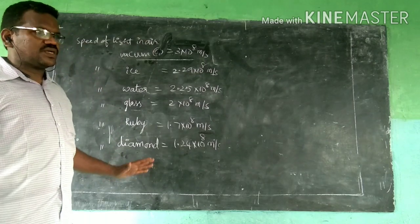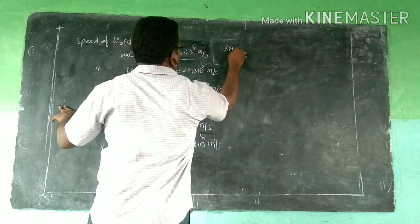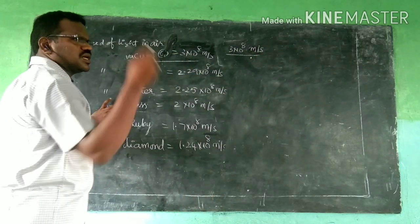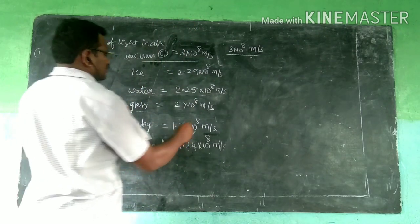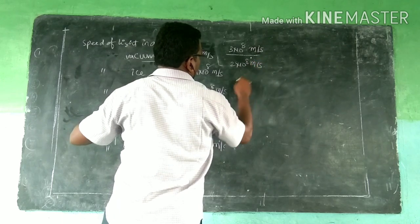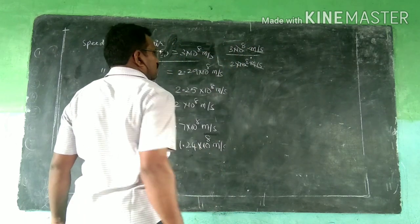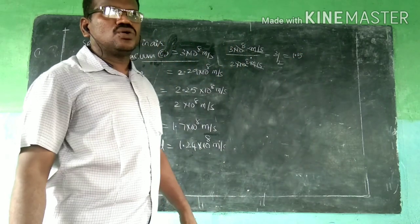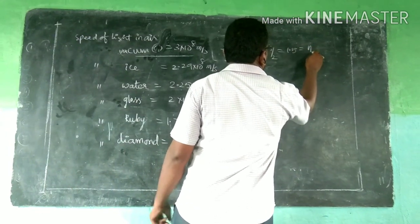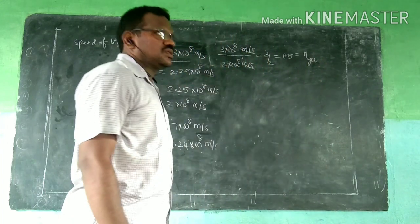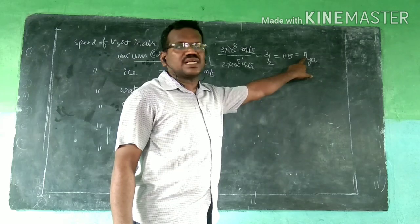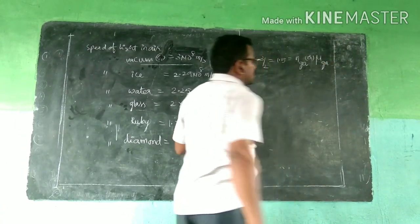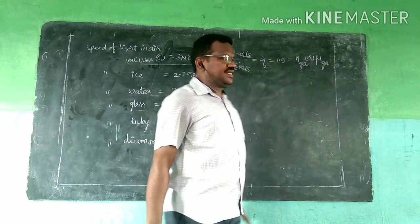Now I am going to compare the speed of light in air — 3×10⁸ m/s — with respect to the speed of light in glass — 2×10⁸ m/s — because we did the air-to-glass activity. By cancelling the units and the powers of 10, we get the value 3/2, which equals 1.5. This numerical value is called the absolute refractive index of glass with respect to air, represented as μ_ga in the CBSE curriculum.